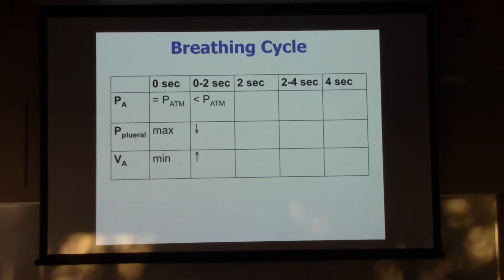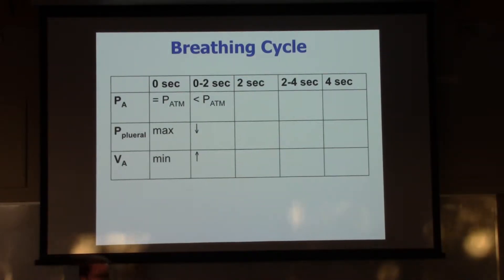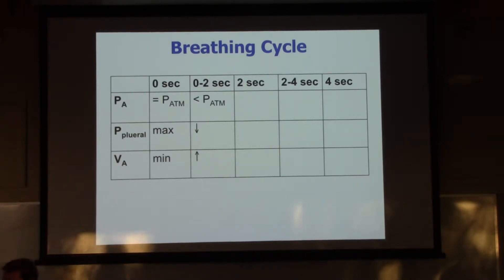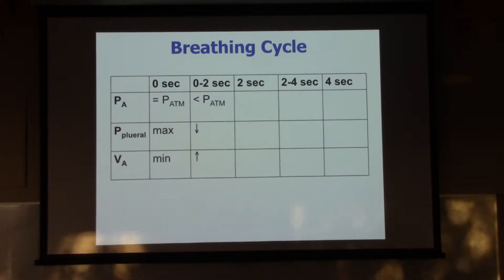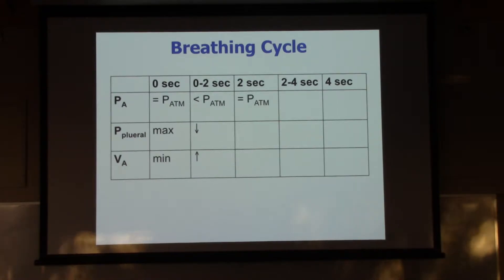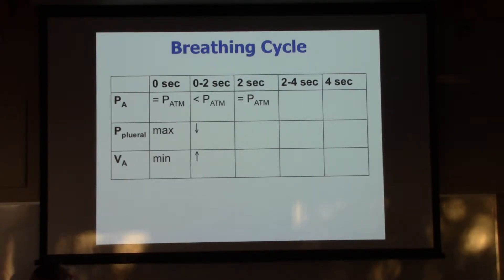We're at the two-second mark now - halfway through the cycle. We just finished inhaling, but we haven't started exhaling yet. So what's the pressure like in the alveoli? It's equal to the atmosphere. There's no air movement, so there must be no pressure gradient between the alveoli and the atmosphere.